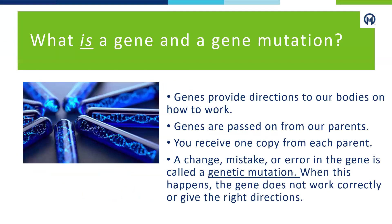To start off, what is a gene and a gene mutation? A gene is an instruction that tells your body how to function. Our genes are passed on from parents to their children so that everyone receives one copy from each parent. Changes, mistakes, or errors in a gene are called genetic mutations. When this happens, the gene does not work correctly or give the right directions to the body.